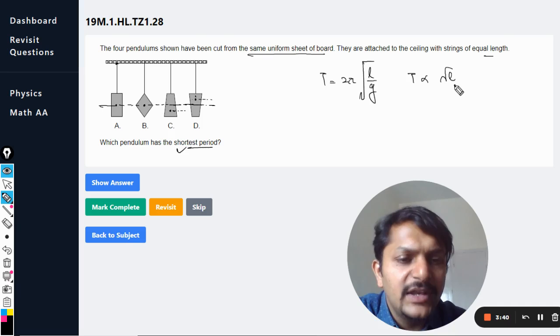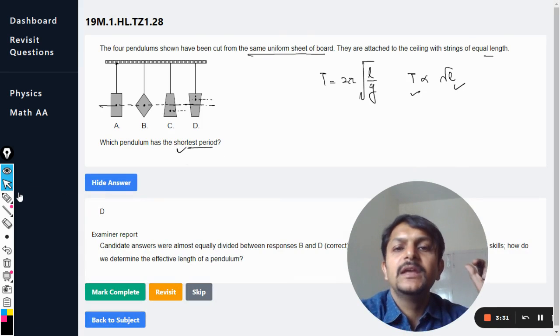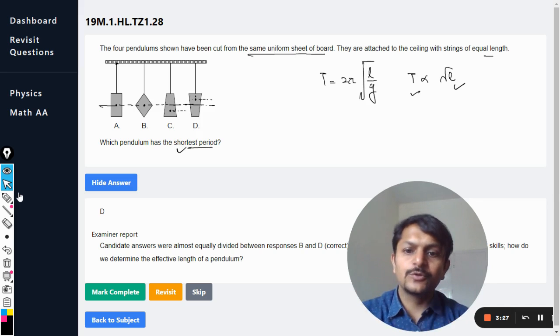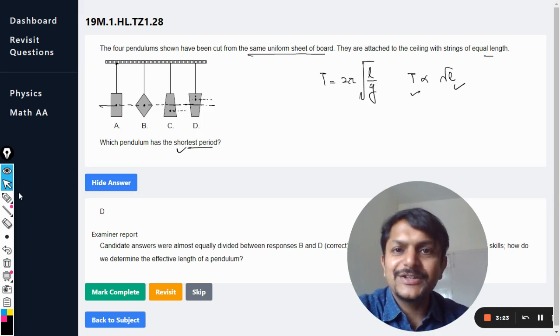And if the length is lesser, the time period will be lesser. You are literally finding the pendulum with the shortest period, which means yes, the answer should be D. And yes my dear students, the answer is D. This is how we do this question. Okay dear students, all the best, bye.